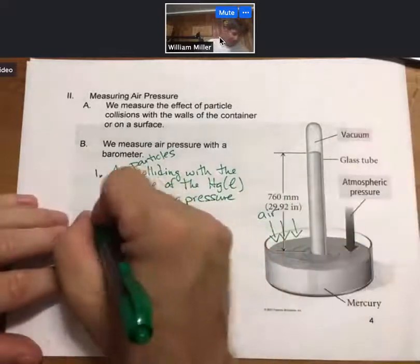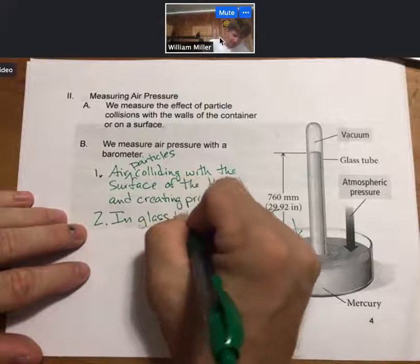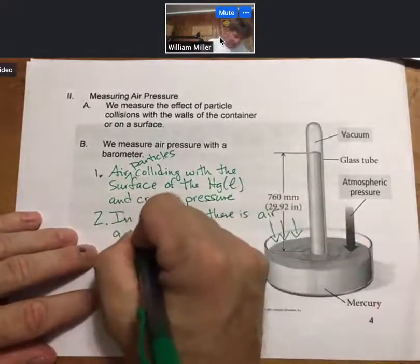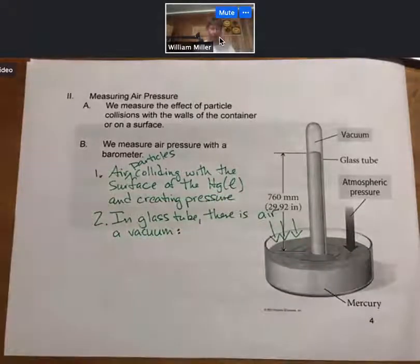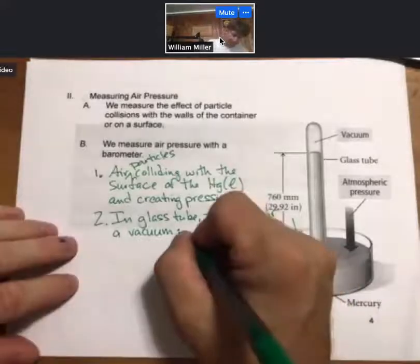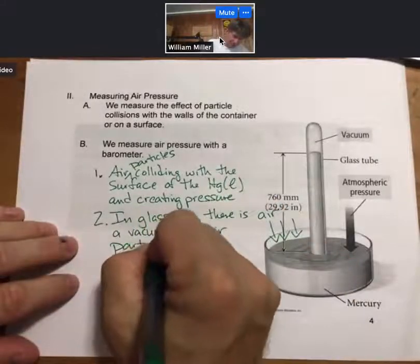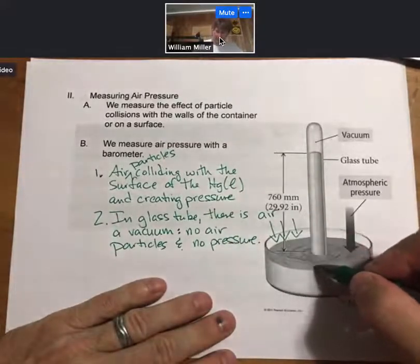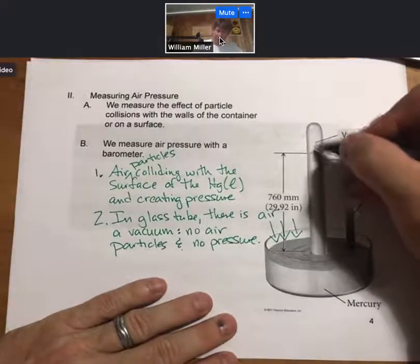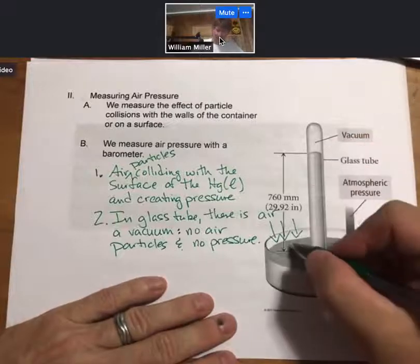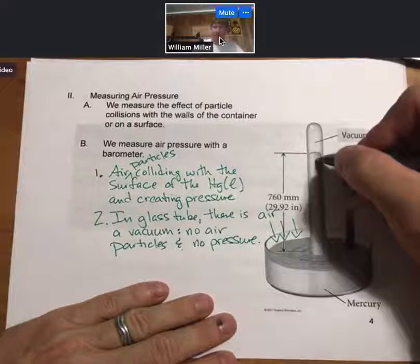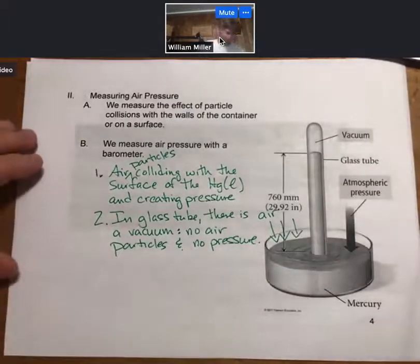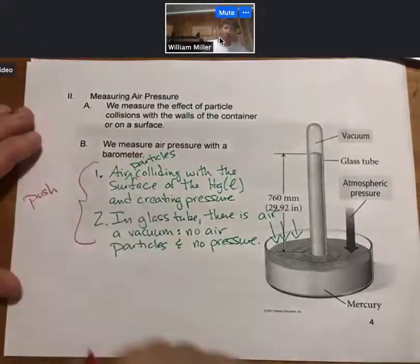In the vacuum, in the glass tube, there is a vacuum. There are no air particles and no pressure. So there's pressure pushing down on the liquid pool of mercury, but no pressure pushing down on the mercury in the tube. Since there's a pressure difference, that's going to push the mercury up the tube. Air pressure pushes the mercury up the tube.